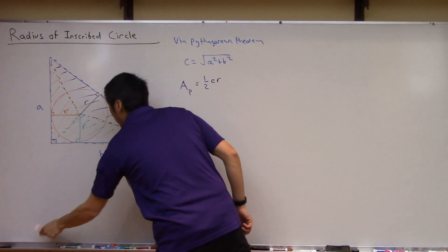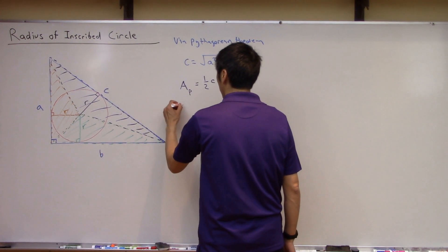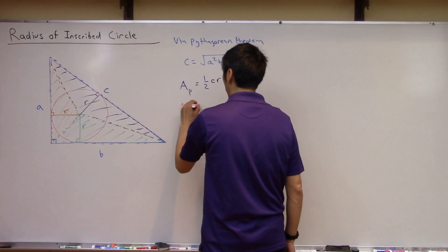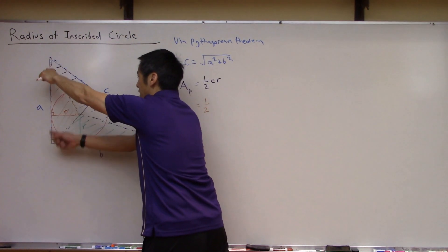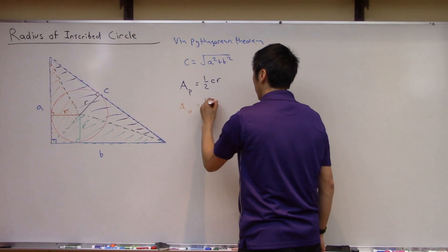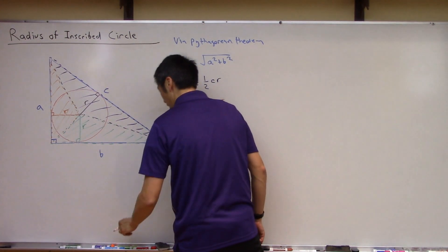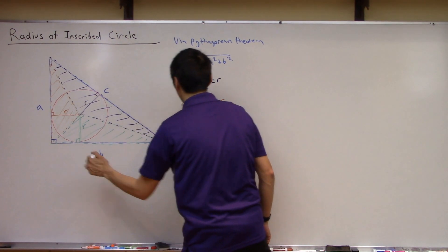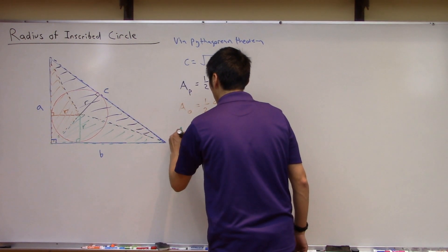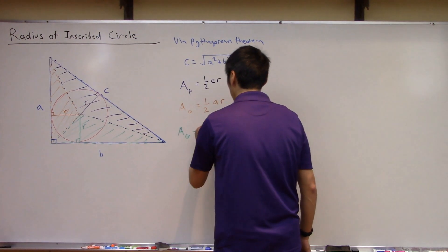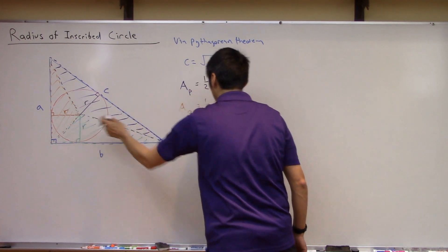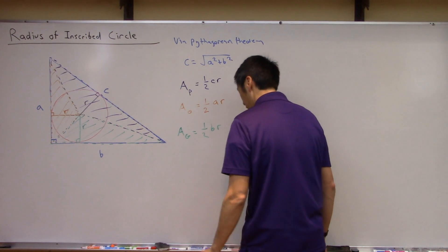Now what we can do is let's go ahead and look at this purple triangle. And we can say that the area of the purple triangle, let's call it A_p, isn't that just one-half times the base, which is c, times the height, which is r? Perfect. And let's do the similar thing for this orange triangle. The area of the orange triangle, that's the same thing. It's one-half times the base, which in this case is a, times its height, which is r. And then lastly, for the green triangle, the area of the green is same thing. It's one-half times its base, b, times the height, which is that radius r that we're interested in.